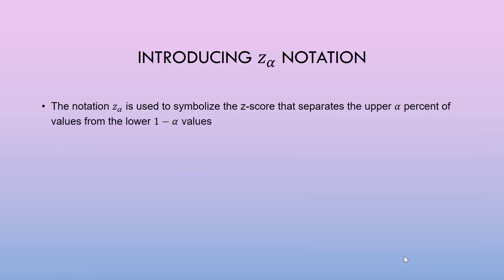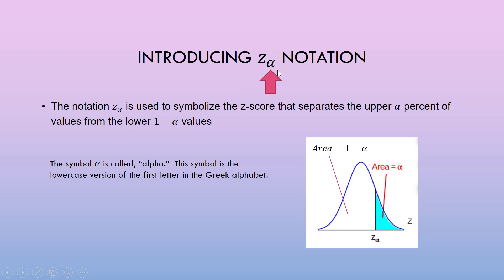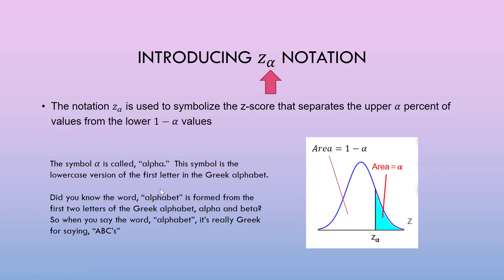Introducing z sub alpha notation. The notation z_alpha symbolizes the z-score that separates the upper alpha percent of the values from the lower 1 minus alpha values. On the normal curve, z_alpha cuts it into two pieces: the upper region has area alpha, and the unshaded area is 1 minus alpha. Alpha, which looks a bit like the letter A, is the lowercase first letter of the Greek alphabet — the word 'alphabet' comes from the first two letters, alpha and beta.